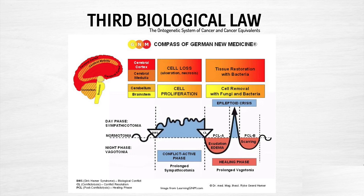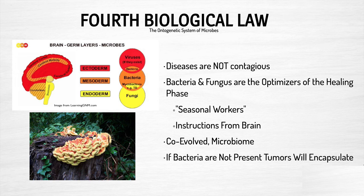The third biological law is the compass of German New Medicine. For brainstem-controlled old brain organs, during conflict activity there is cell proliferation, which during healing is broken down with fungi and bacteria. For cerebral cortex-controlled organs, during conflict activity there is cell loss, ulceration, or necrosis, which is then restored during healing. The fourth biological law is the ontogenetic system of microbes — diseases are not contagious. Bacteria and fungi are the optimizers of the healing phase, seasonal workers operating off instructions from the brain that co-evolved with us. Without tubercular bacteria, tumors will encapsulate because they cannot be broken down.